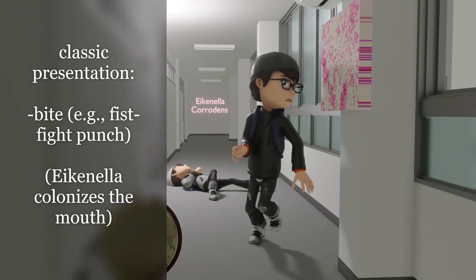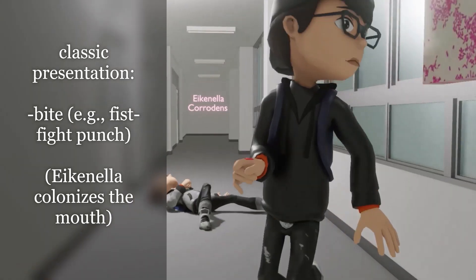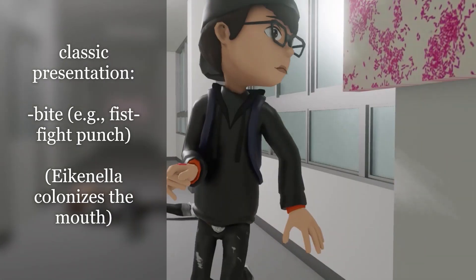For example, a person gets in a fist fight in the hallway of a school. They get a wound on their hand and get infected with Eikenella corrodens. The reason this happens is because the mouth is colonized by bacteria, and most notably Eikenella corrodens.